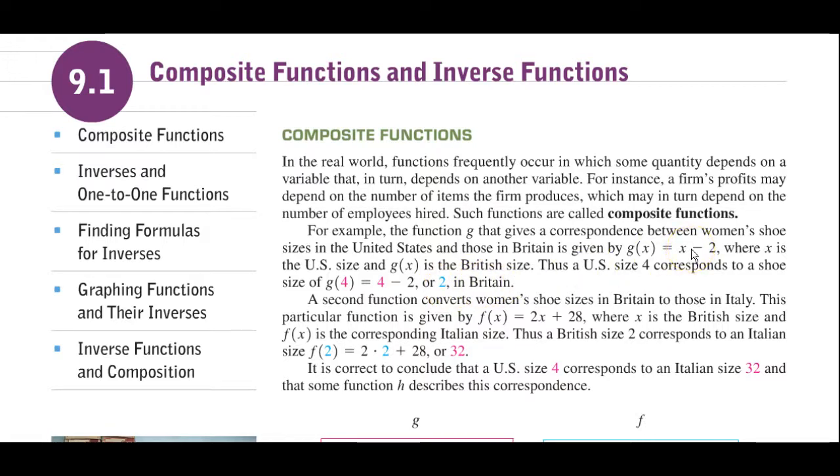Now, a second function converts women's shoe sizes in Britain to those in Italy. This particular function is given by f(x) = 2x + 28, where x is the British shoe size now, and f(x) corresponds to the Italian size. The British size 2 corresponds to an Italian size of 2 times 2 plus 28, which is 32.